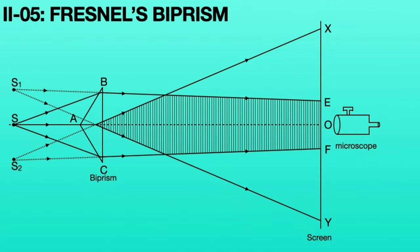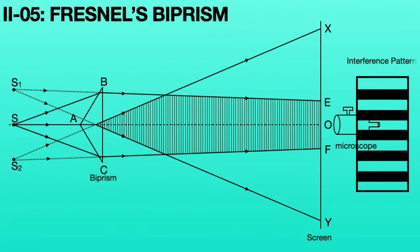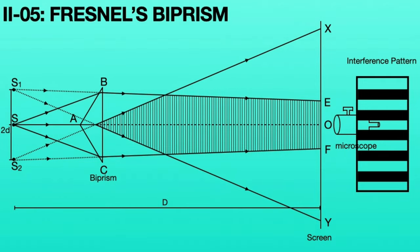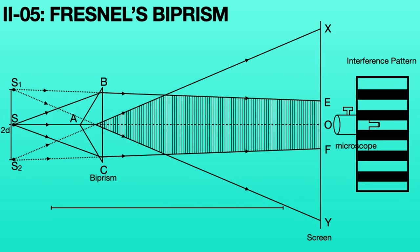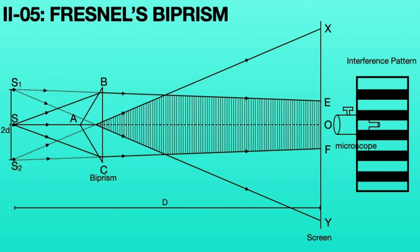With the help of a microscope, we can calculate fringe width beta. If 2D is the distance between the two virtual sources and capital D is the distance to the screen, then we can evaluate the wavelength of the monochromatic source using the formula: lambda is equal to beta times 2D divided by capital D. The distance between the real source and the screen, capital D, can be evaluated physically and measured using a scale, but we cannot measure the distance between the two virtual sources S1 and S2 physically.